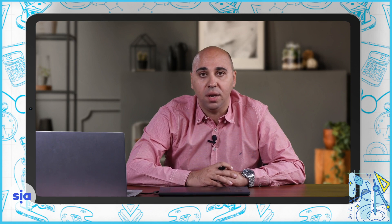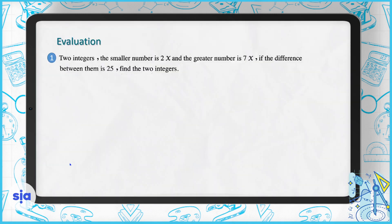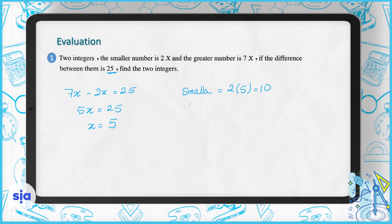Evaluation question 1: two integers — the smaller number is 2X and the greater is 7X. If the difference between them is 25, find the two integers. Since the difference is positive, the greater minus the smaller equals 25, so 5X equals 25 and X equals 5. The smaller number is 2 times 5, which is 10, and the greater is 7 times 5, which is 35.